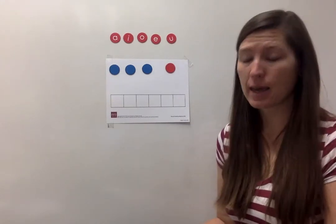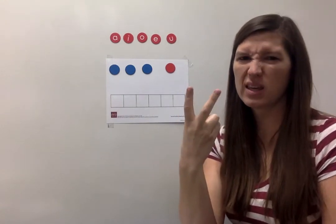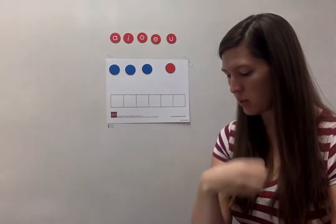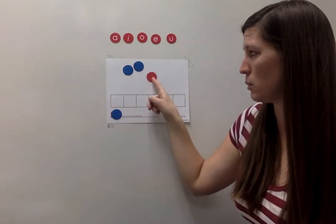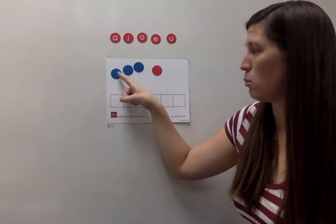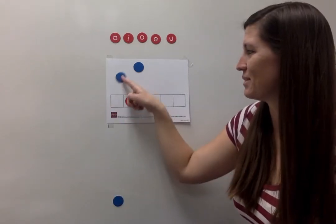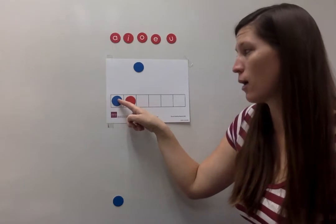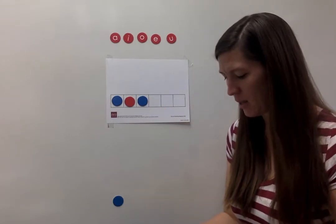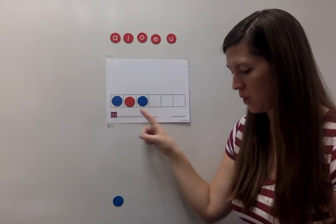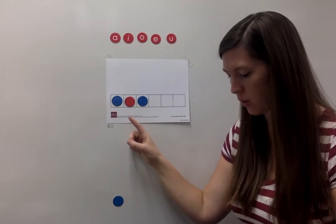Okay, watch me — my turn. The first word is 'him'. Let's finger stretch the word. Three sounds. Watch me pull down the sound chips: blue, red, blue.